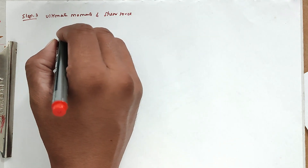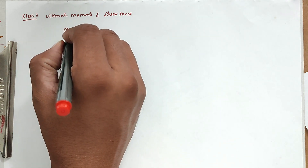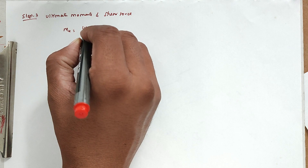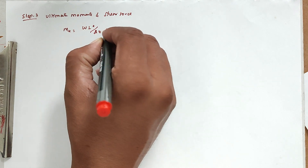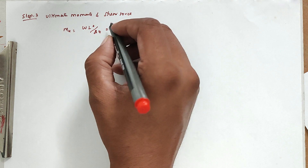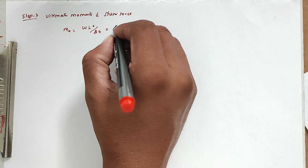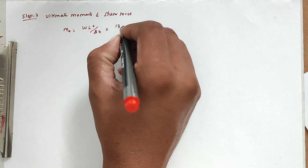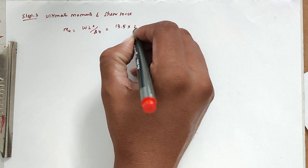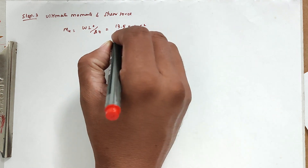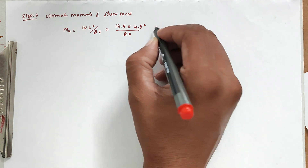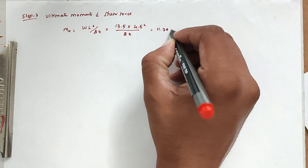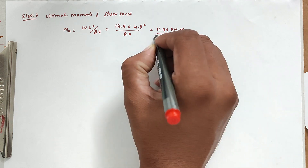Step 3: Ultimate moments and shear force. Using yield line theory, Mu = wL²/24. Substituting values: Mu = 13.5 × (4.5)² / 24 = 11.39 kN·m. This is the ultimate moment.